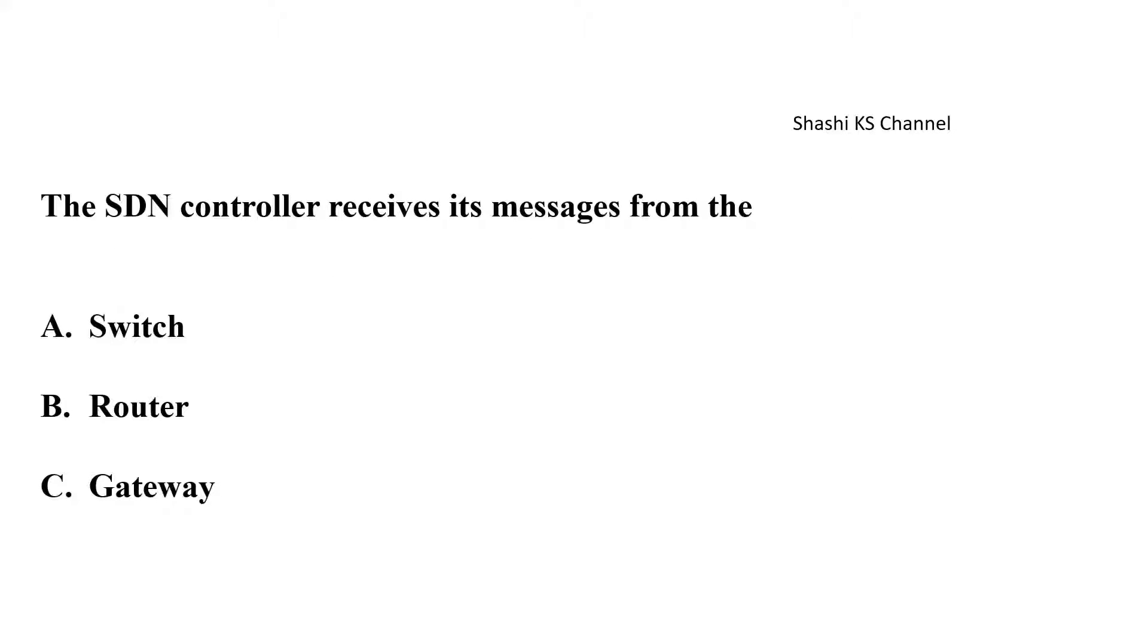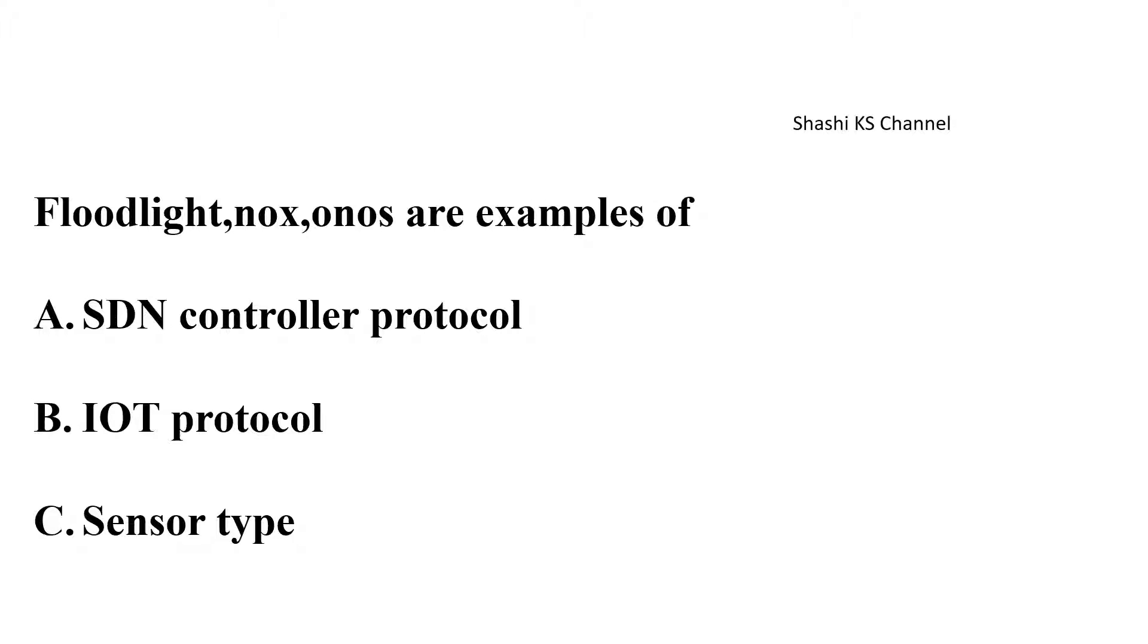The next question is the SDN controller receives its messages from dash. Is it a switch or a router or a gateway? The answer to this is option a switch. Next question floodlight nox and onas are examples of dash. SDN controller protocols, IoT protocols, sensor types. The right answer to this is SDN controller protocol.